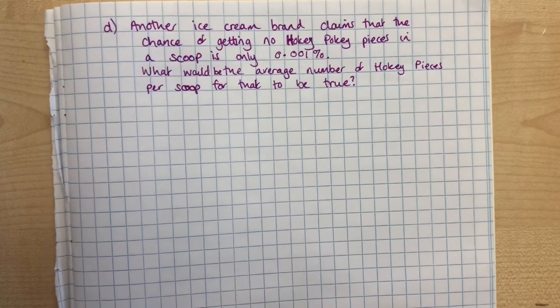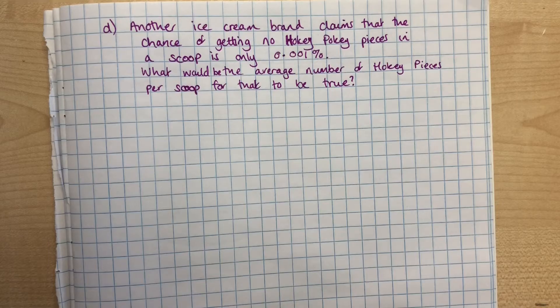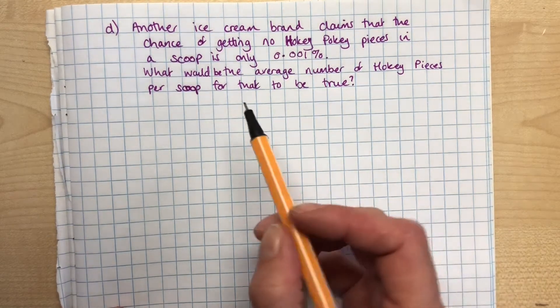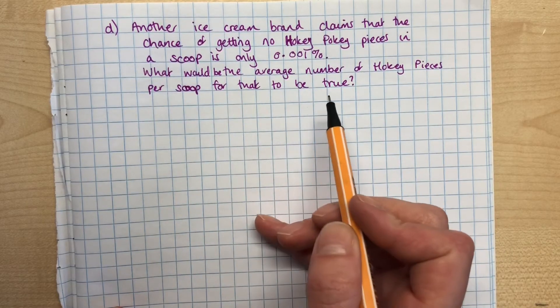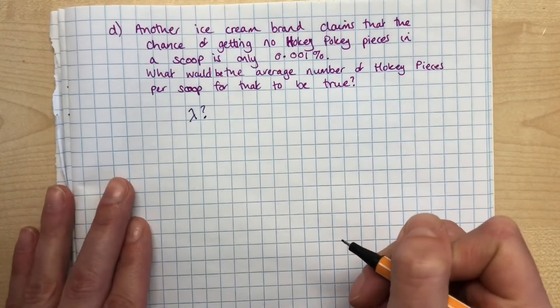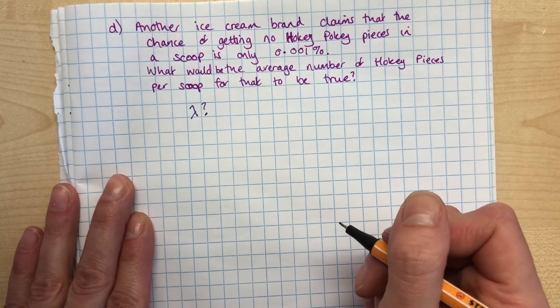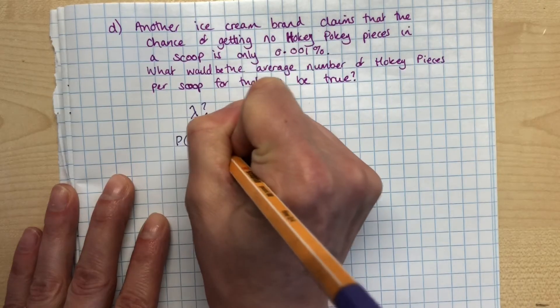We're going to have a look at this one. So another ice cream brand claims that the chance of getting no Hokey Pokey pieces in a scoop is only 0.001%. What would be the average number of Hokey Pokey pieces per scoop to make that true? So this time we're working out what is lambda. Now for this one, you'll have to use your knowledge of the formula. So for the probability of X equals 0...